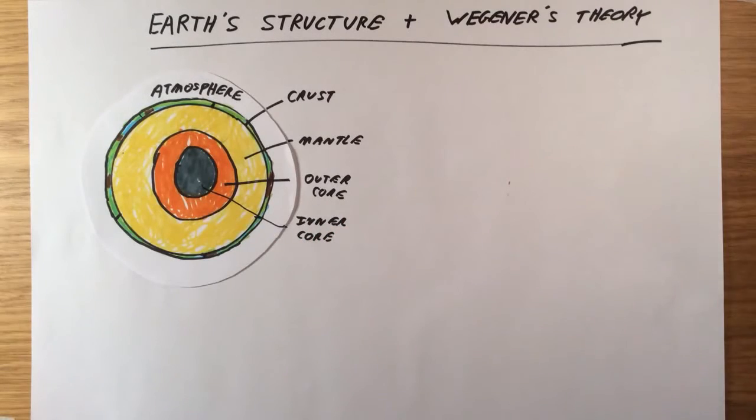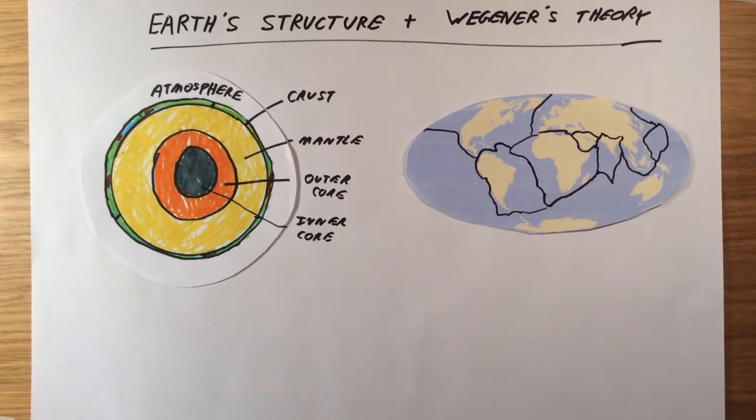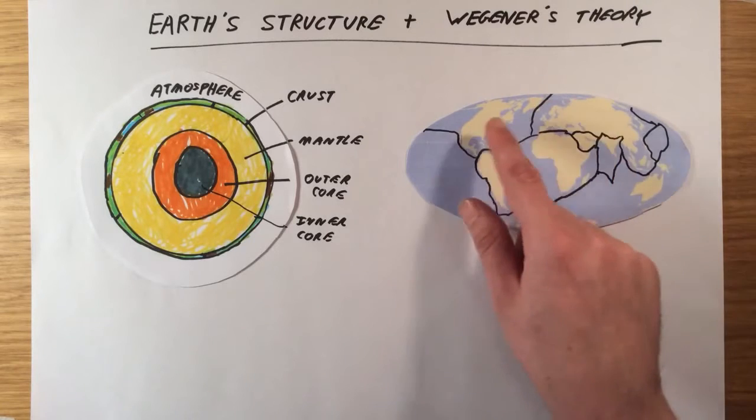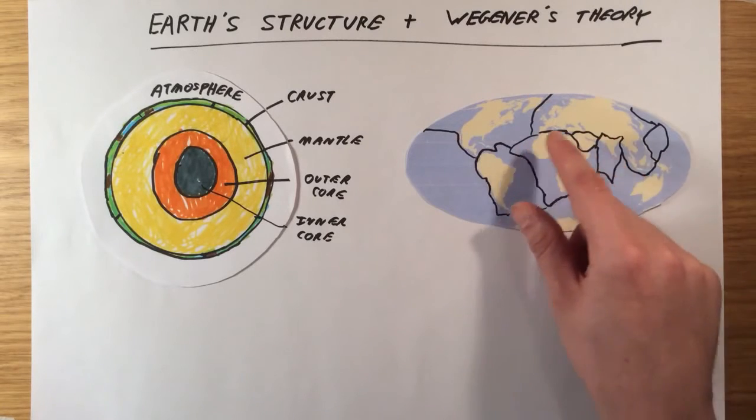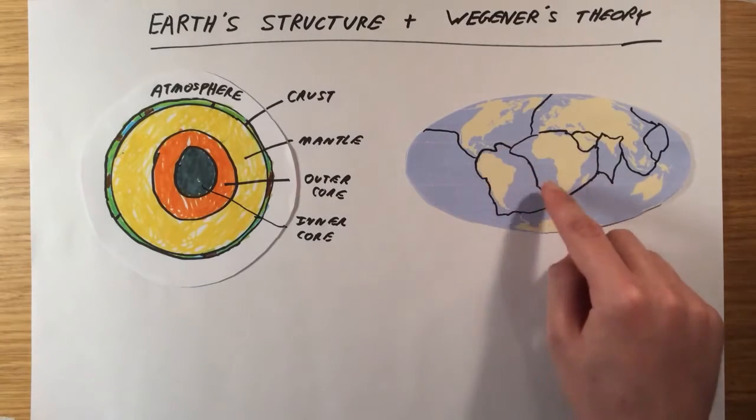If you were to look at the crust from above, you would see a map of the Earth or atlas which would look like this. You'd have all the continents, which are the yellow outlines here. However, underneath that, the different sections of the Earth's crust are split into different sections called tectonic plates, and I've sketched the outlines of some of these plates here.